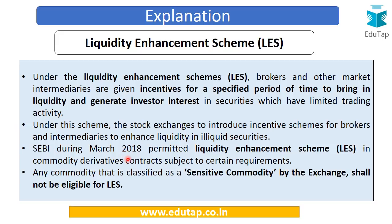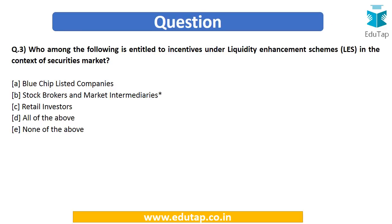SEBI during March 2018 permitted the Liquidity Enhancement Scheme in commodity derivative contracts, subject to certain requirements — which is why this scheme was recently in the news. However, there is a rider: any commodity classified as a sensitive commodity is not eligible for the Liquidity Enhancement Scheme, as we do not want to promote liquidity in sensitive commodities. The correct answer is option B — stock brokers and market intermediaries.